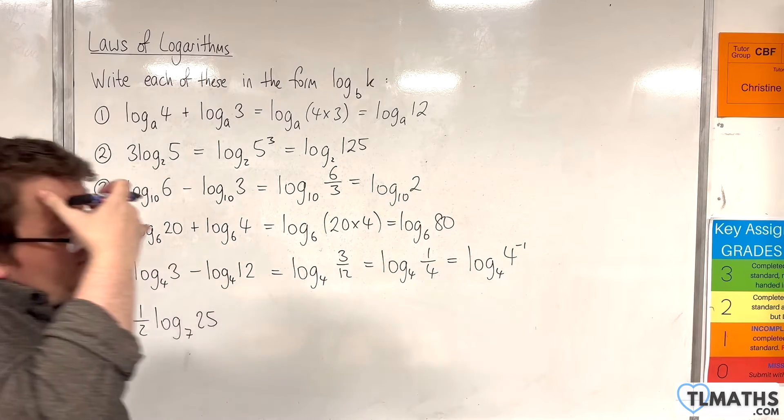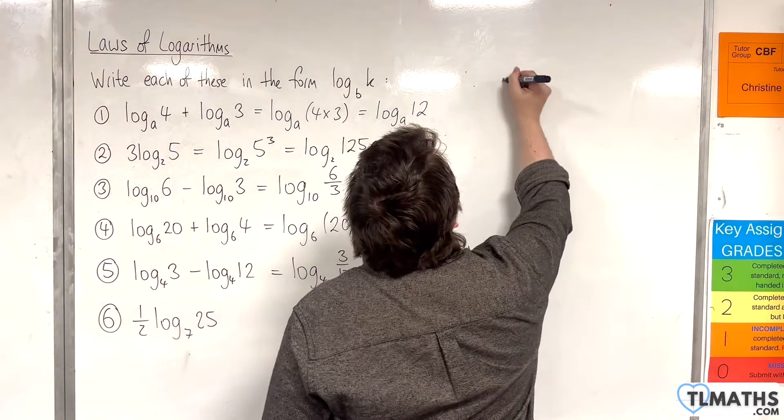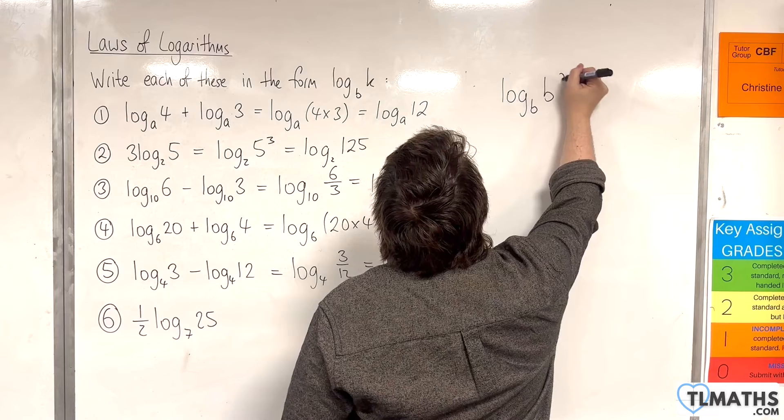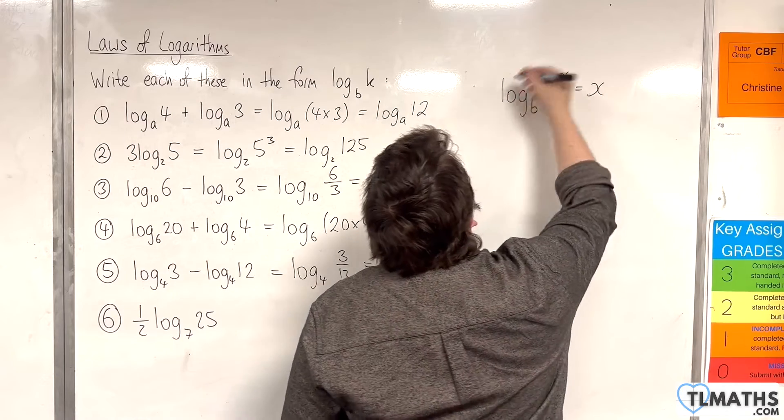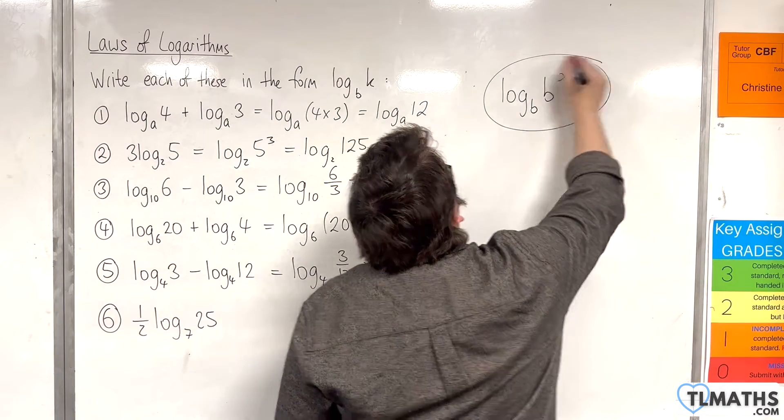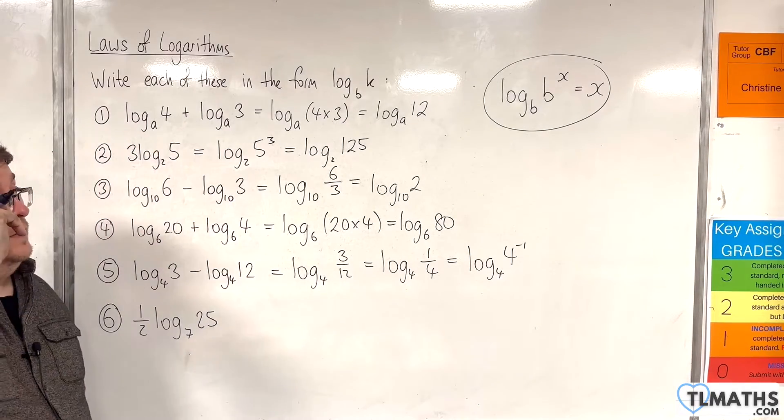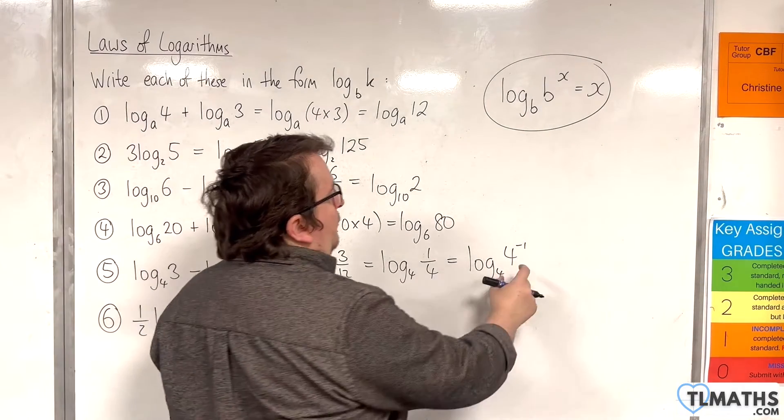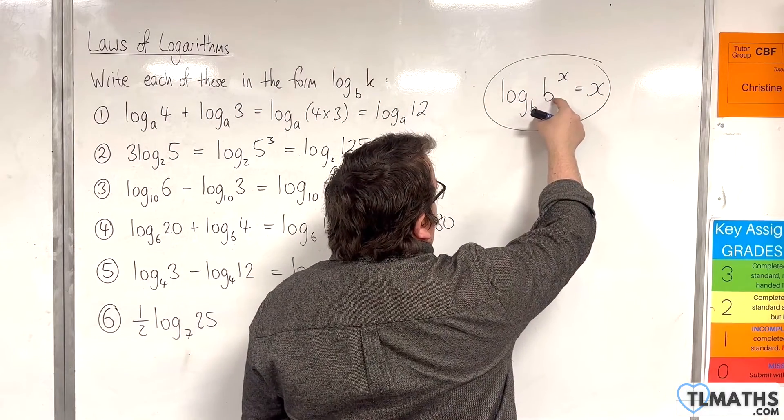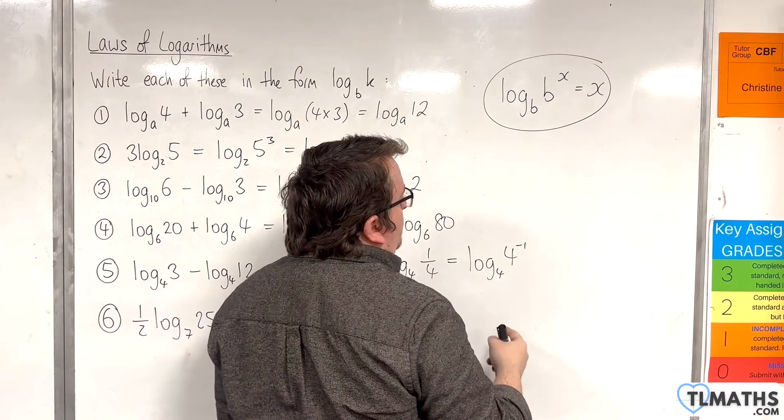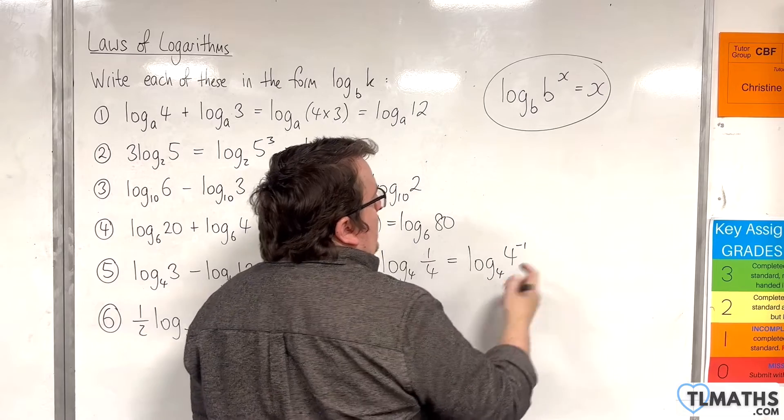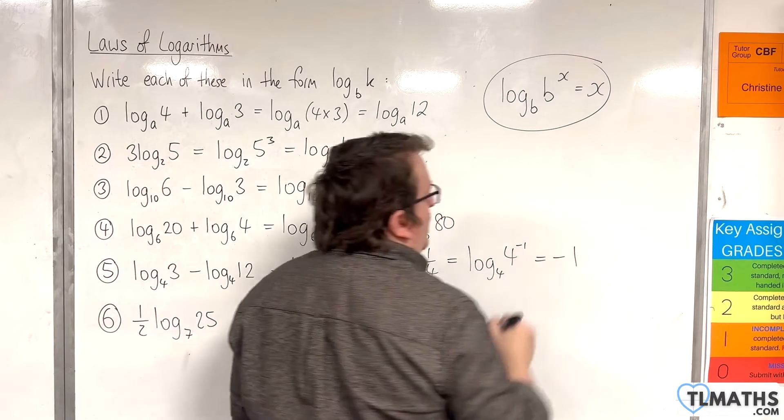And if you remember, log base b of b to the x was x. This is what we had when we started deriving the laws of logarithms. So here we've got 4 and 4. So b is 4. And the x here is minus 1. So this is actually the same thing as minus 1.